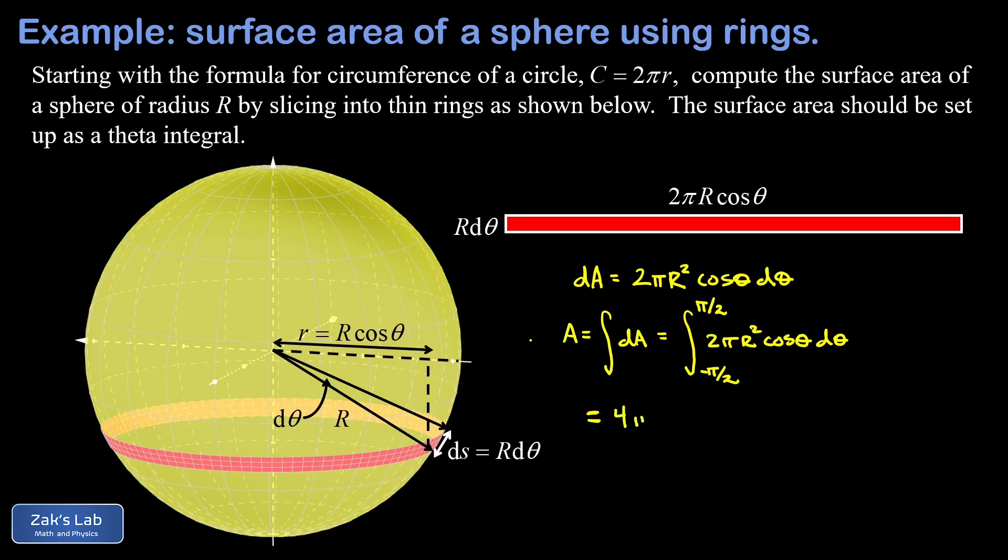As I do that, I'm going to move all the constants out in front of the integral. So I end up with four pi R squared, because that symmetry trick produced a factor of two, and then we have the integral from zero to pi over two of cosine theta d theta.